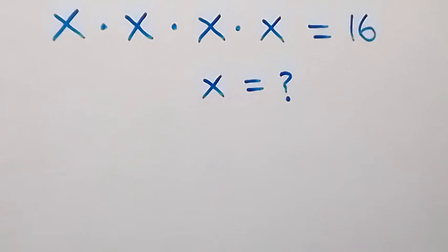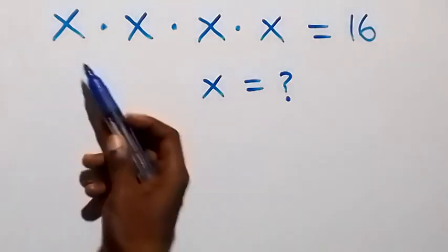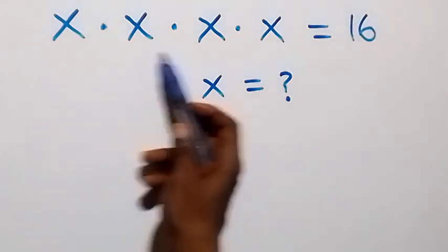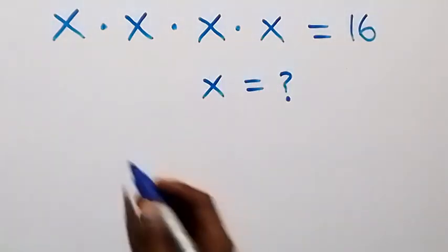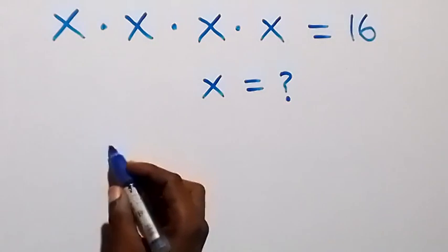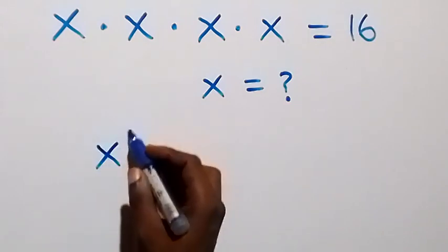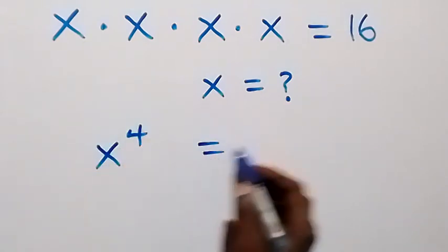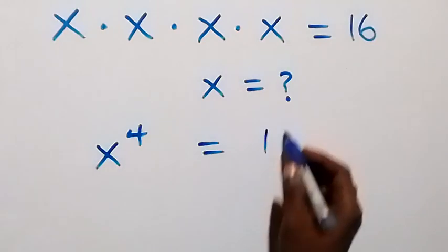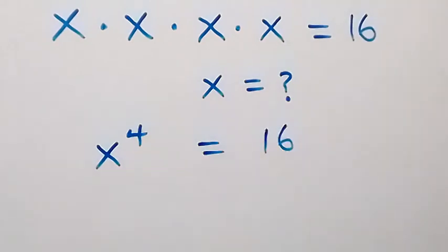Hello, you are welcome. How to solve this nice algebra problem to find x. Here we have x times x times x times x, which is the same thing as x raised to power 4, which equals 16.